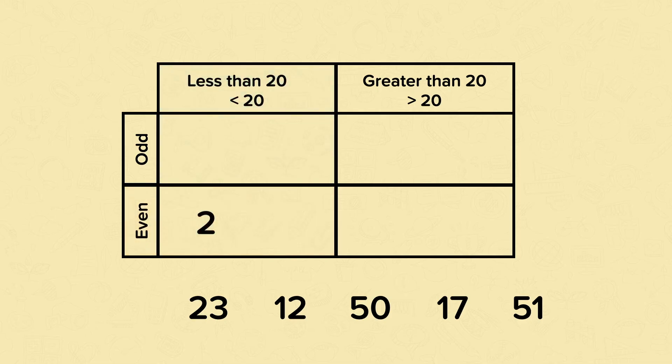Now let's move on to twenty-three. Twenty-three is greater than twenty and it's odd, so it must go here. Now for twelve. Twelve is less than twenty and it's even, so it must go here.